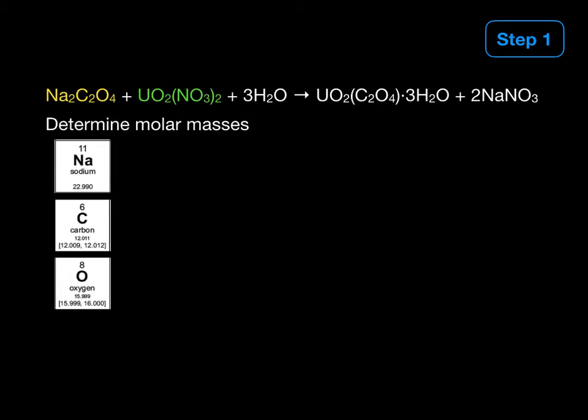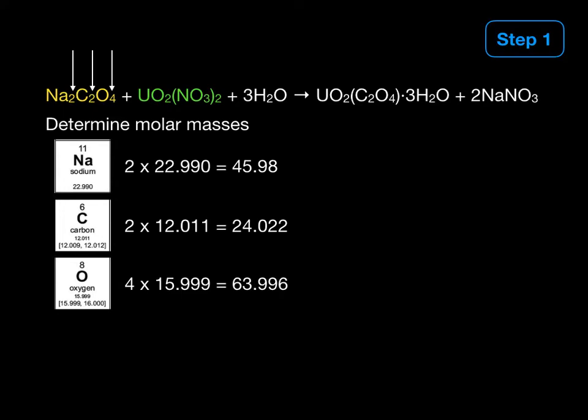So we will use the periodic table and the subscripts in the formula. There are two sodium atoms here for a total of 45.98, and we have two carbon atoms for a total of 24, and finally we have four oxygen atoms for a total of 63. And so we sum all these up to get the molar mass of 133.998. Remember that molar mass is the mass in grams of one mole of any substance.